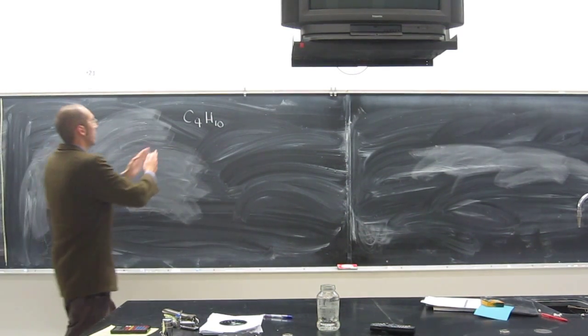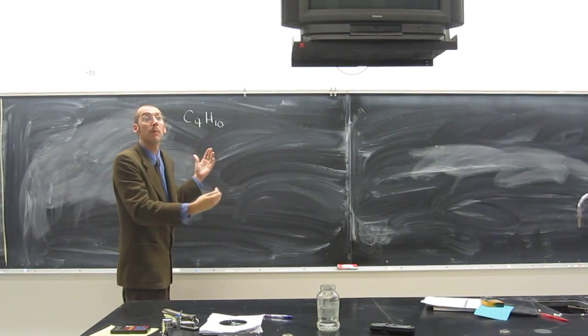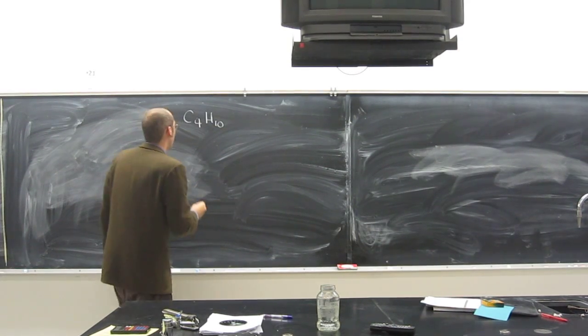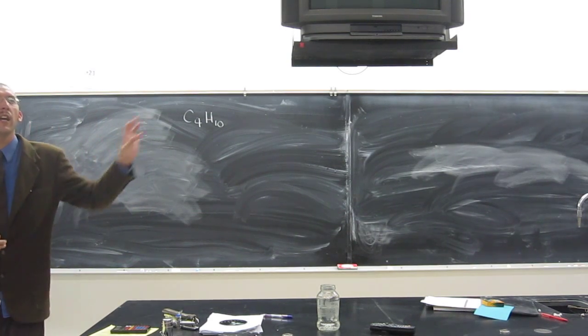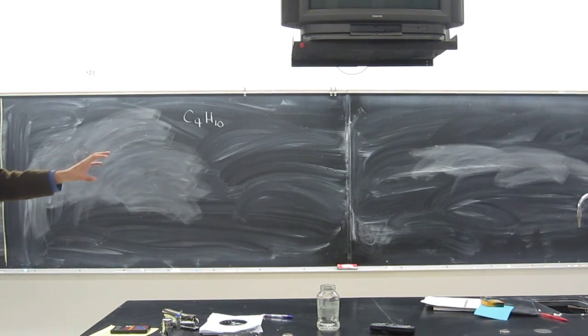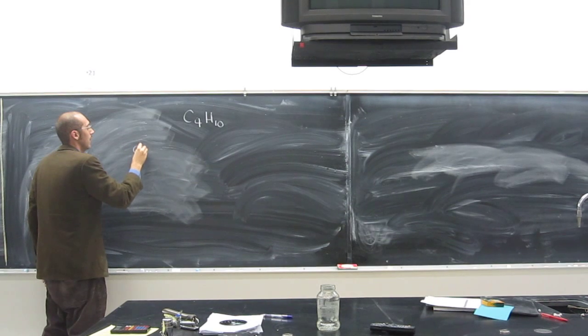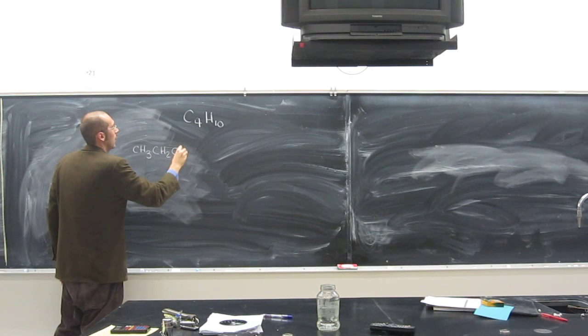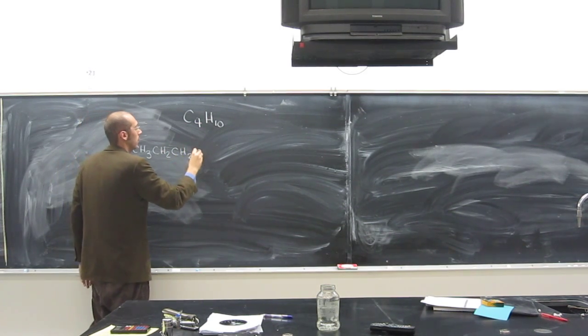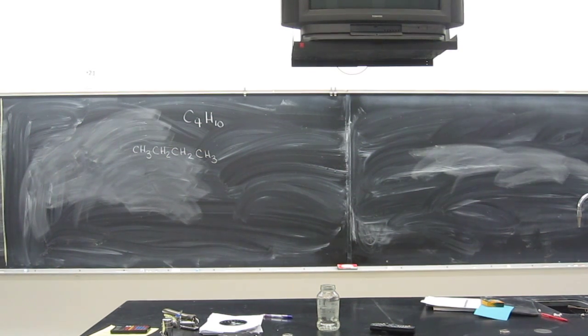So we can expand this to give us a little bit more information about it. So the condensed structure is to show the carbon chain all stuck together but just in one line. So in this case, we would say butane is CH3, CH2, CH2, CH3. That's the condensed structure.